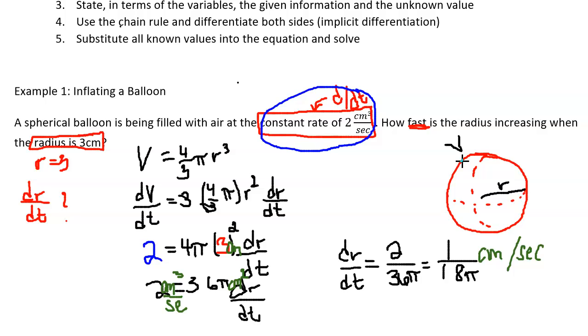And so I am getting that the radius is changing at about 0.018 centimeters per second and then this is really important because this is not an end-all be-all solution. This is how fast the radius is changing when the radius is 3 centimeters. This does not apply to the entire problem. This is not the rate the entire time that the balloon is being filled.